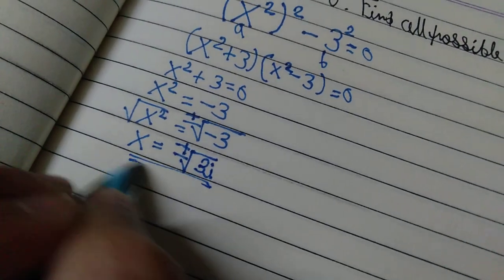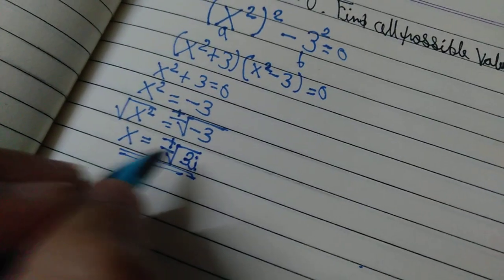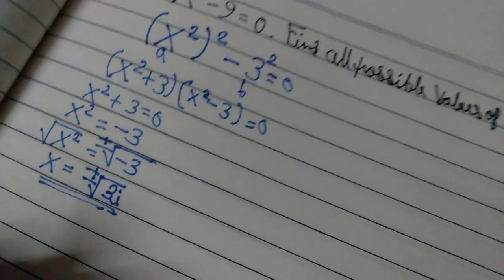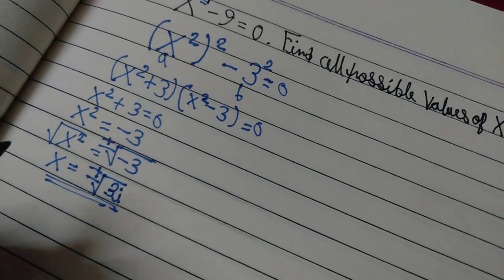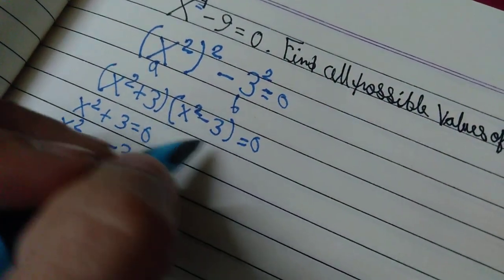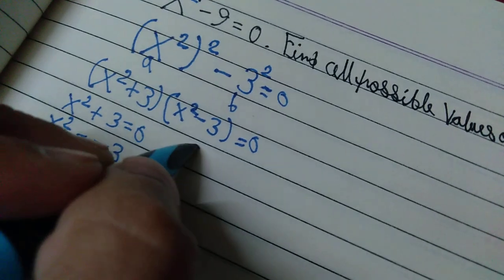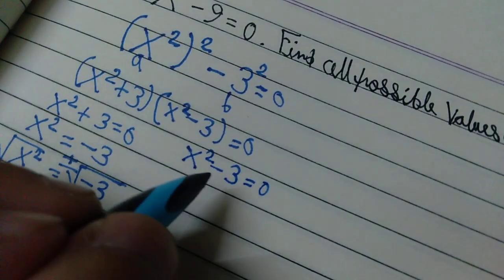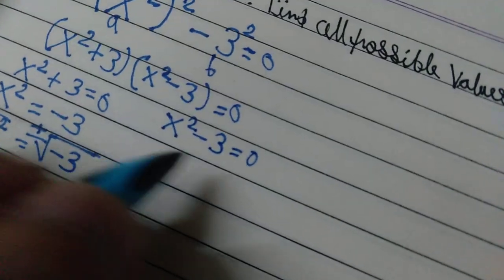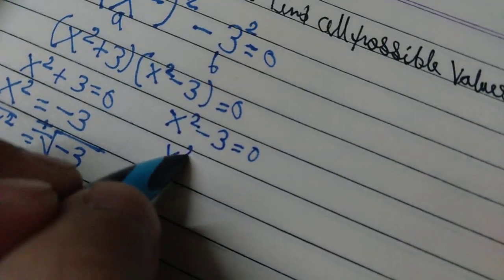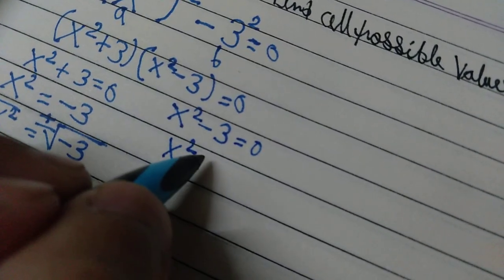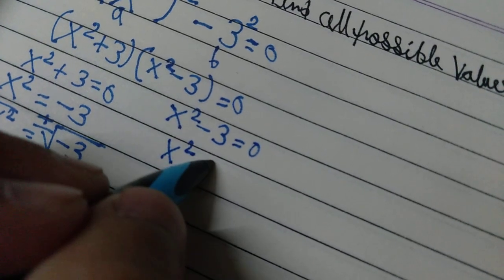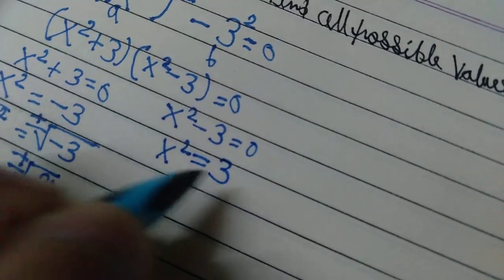Here x squared minus 3 equals 0. If we add 3 to both sides, we will get x squared equals 3.